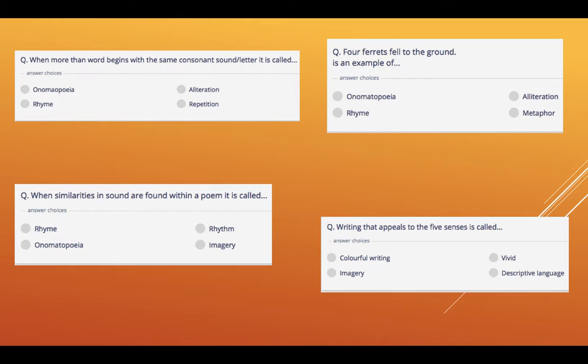writing that appeals to the five senses is called imagery. So when you read a phrase, you use one of your senses to identify the phrase. It could be something to do with sound, could have something to do with touch or taste or something that you hear. So you're using your senses to create an image of what's happening in your mind.